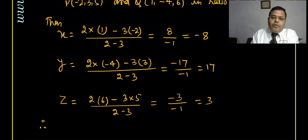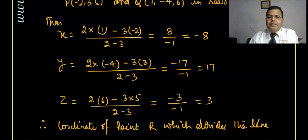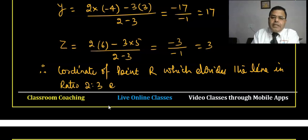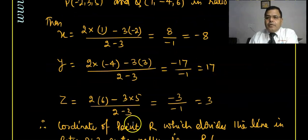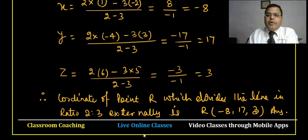Therefore the coordinate of point R which divides the line segment in ratio 2:3 externally is (-8, 17, 3). I hope you got it.